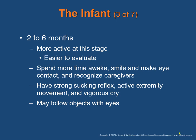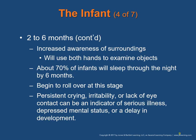At 2 to 6 months, infants are more active, spending more time awake, smiling, making eye contact, and recognizing caregivers. They often have a strong suckling reflex, active extremity movement, and a vigorous cry. They may follow objects with eyes and use both hands to examine objects. About 70% of infants sleep through the night by 6 months and begin to roll over. Persistent crying, irritability, or lack of eye contact can indicate serious illness, depressed mental status, or developmental delay.